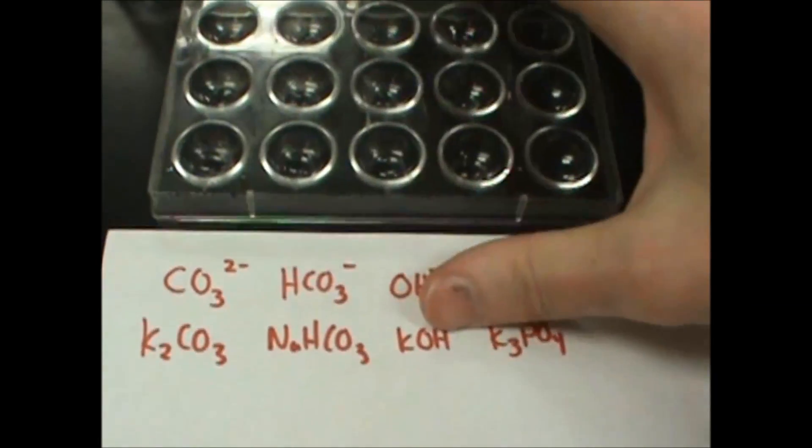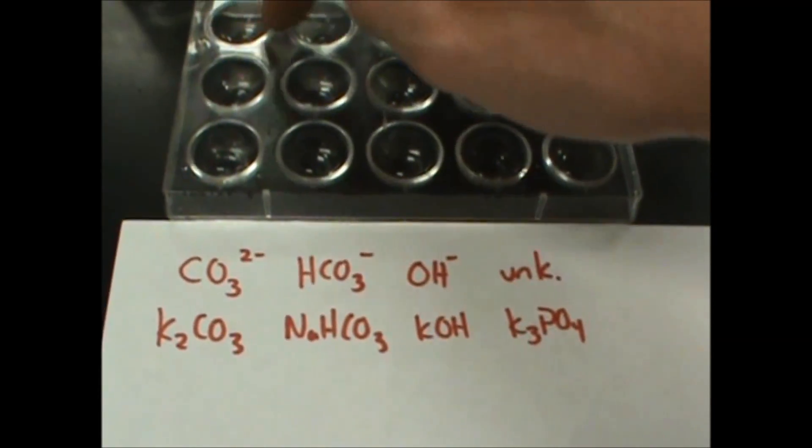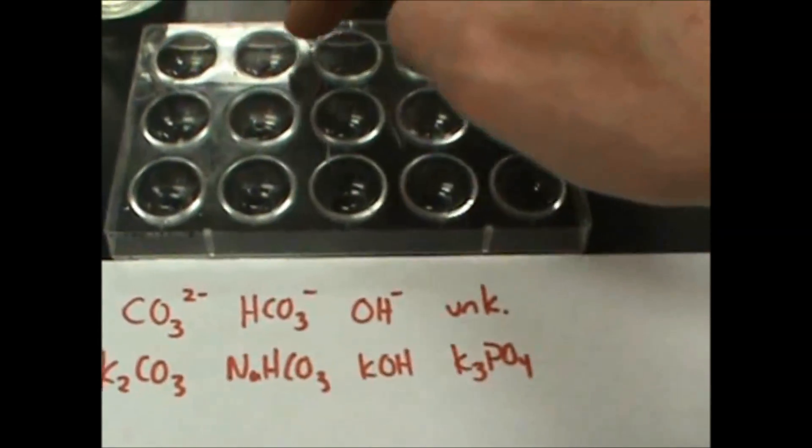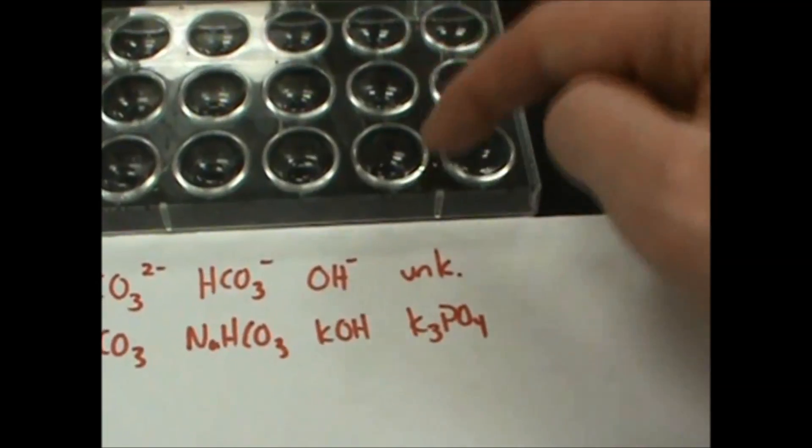Here I'm going to run you through how to do the carbonate, bicarbonate, and hydroxide tests. I've put carbonate into these three wells, bicarbonate into these three, and hydroxide into these three, and then I've put my unknown, which for me I use potassium phosphate.